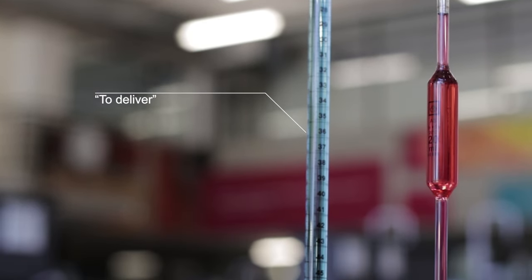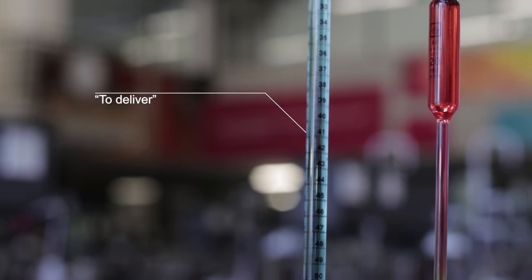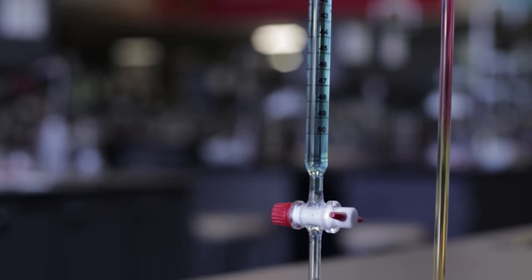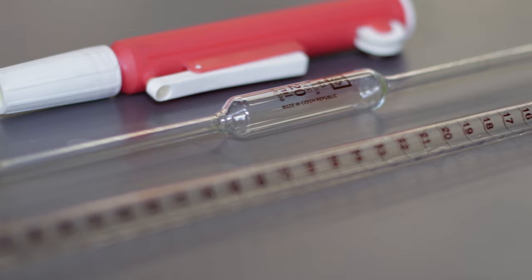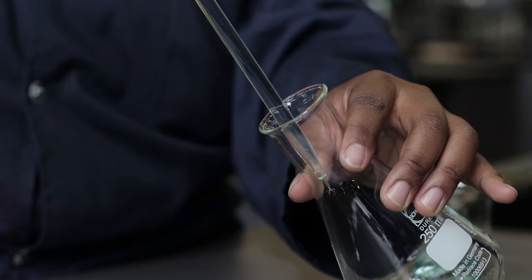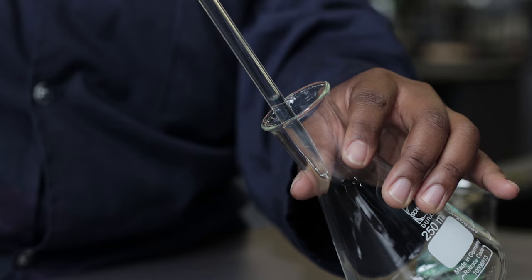The second type of glassware is classified as to deliver. To deliver glassware refers to glassware that is designed to deliver a precise volume. They are designed to contain a little more solution than the indicated volume so as to deliver the precise volume stated on the glassware. This is due to some of the liquids sticking to the sides of the glassware.